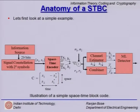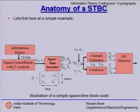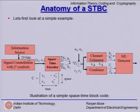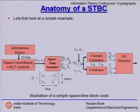Let us revisit the anatomy of a space time block code, STBC for short. An information source pumping in bits of information: we take 2b bits at a time. The first b bits are used to select one signal S1 from the signal constellation and the next b bits are used to pick up another signal S2. Thus we have a tuple S1, S2 coming out from the signal constellation block, which is fed to the space time encoder.